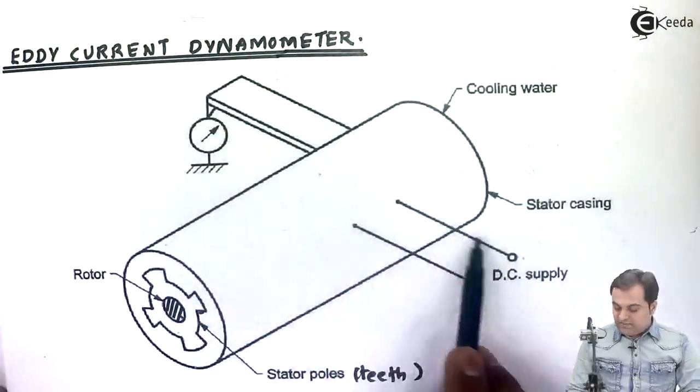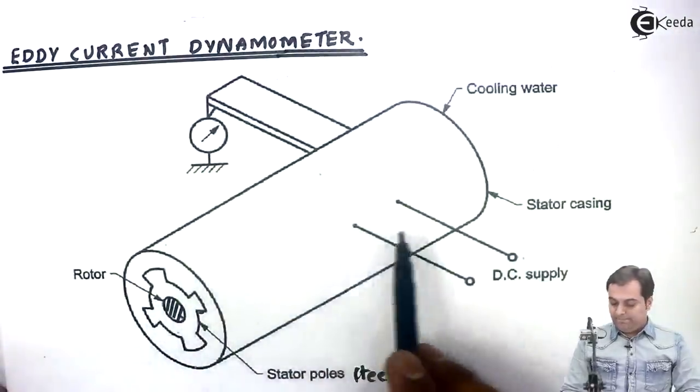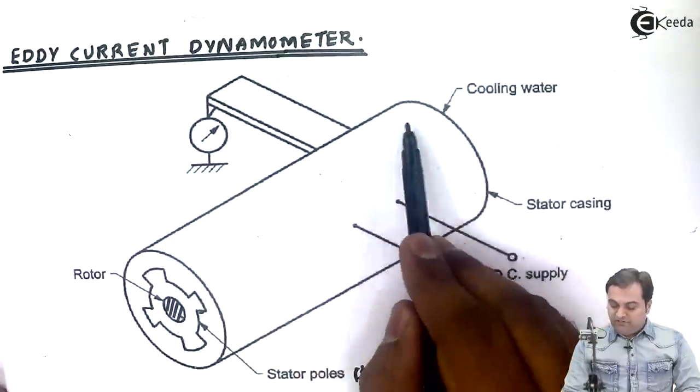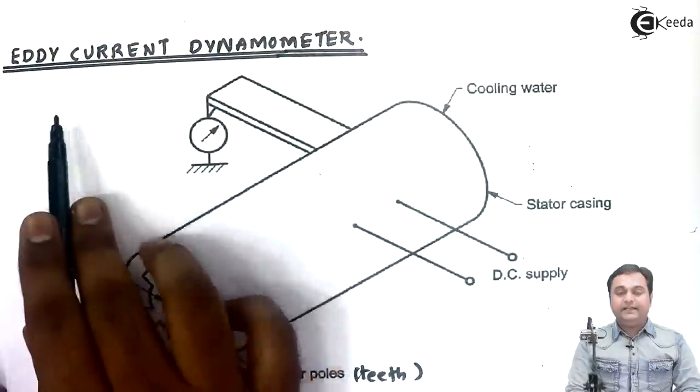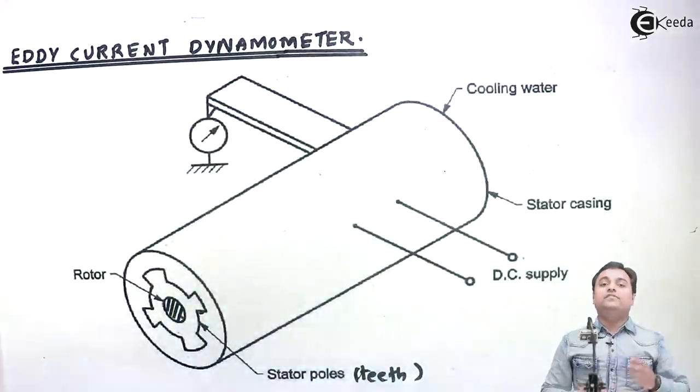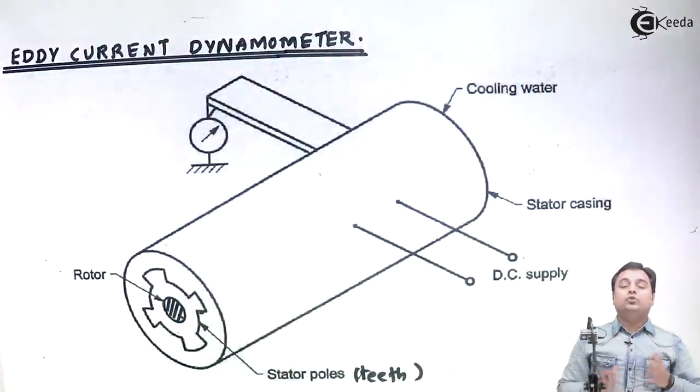Then DC supply is given to the stator. After that, we have a cooling water arrangement. In the eddy current dynamometer, a lot of heat is generated, so you need to cool the dynamometer.